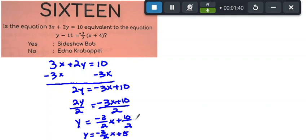Now let's take the other equation. Here I have y minus 11 equals negative 3 halves x plus 4. One good thing is I know that my slope is the same, so that's a good start.